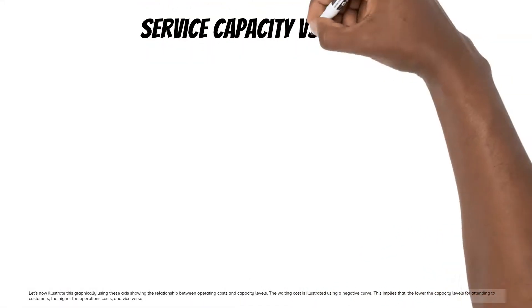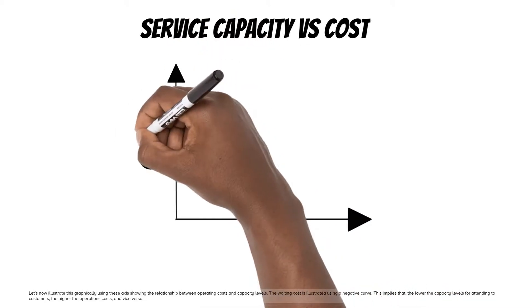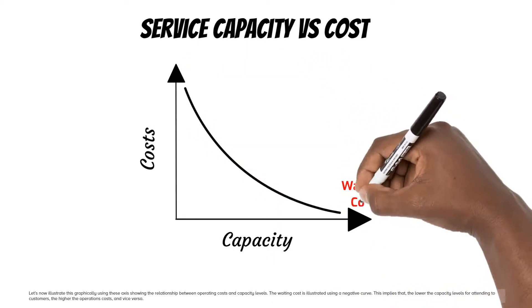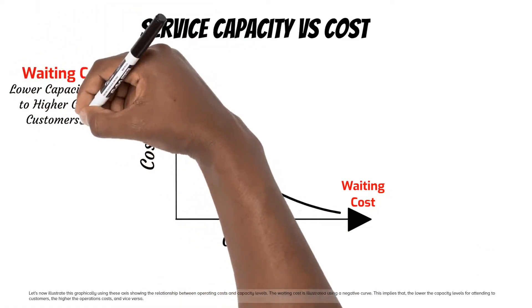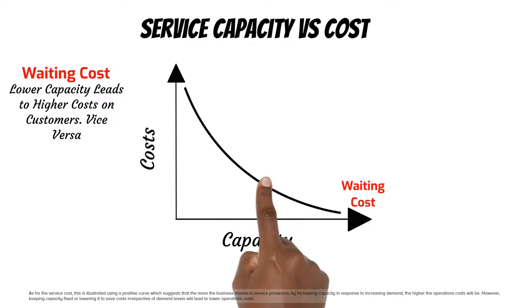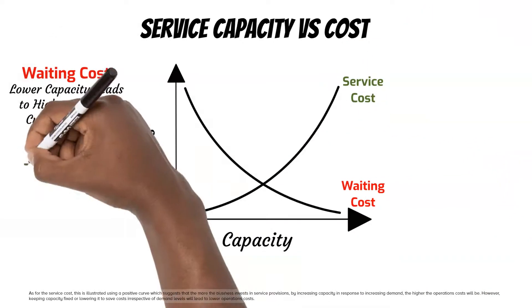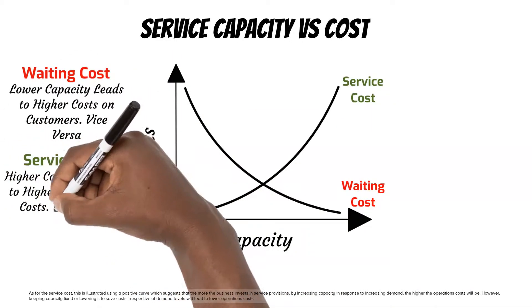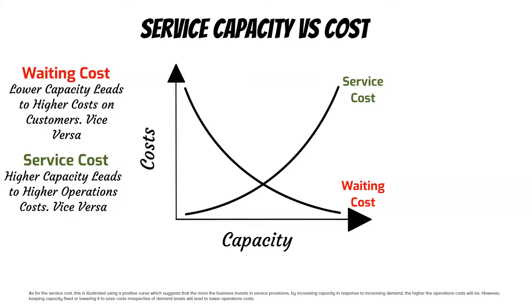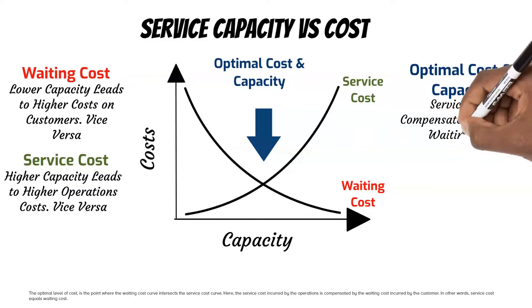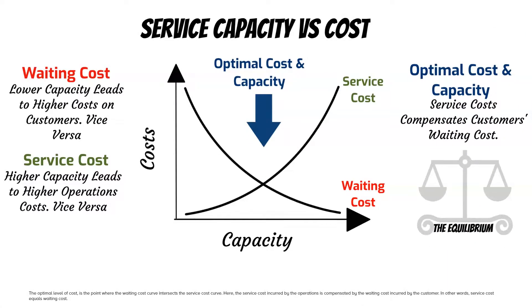Let's now illustrate this graphically using axes that show the relationship between operating costs and capacity levels. The waiting cost is illustrated using a negative curve, implying that the lower the capacity levels for attending to customers, the higher the operations costs, and vice versa. As for the service cost, this is illustrated using a positive curve, which suggests that the more the business invests in service provisions by increasing capacity in response to increasing demand, the higher the operations costs will be. The optimal level of cost is the point where the waiting cost curve intersects the service cost curve, where service cost equals waiting cost.